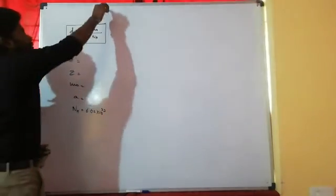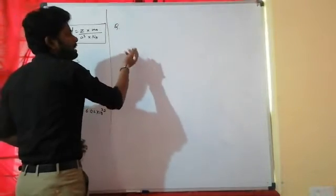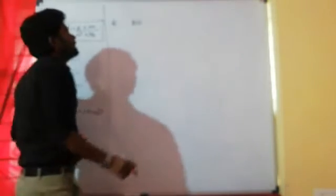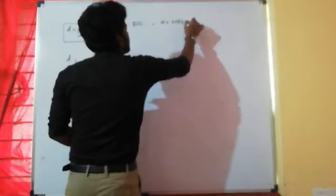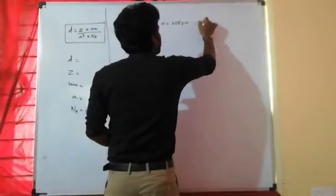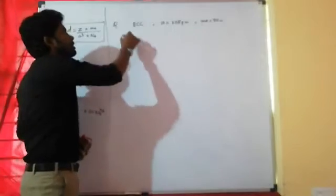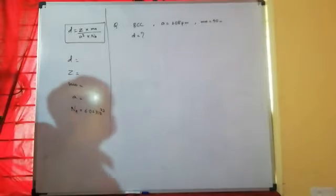Now here is a related question. An element which crystallizes in a BCC unit cell with an edge length of 208 picometers and its atomic mass is 90 u. Then calculate the density of the unit cell.